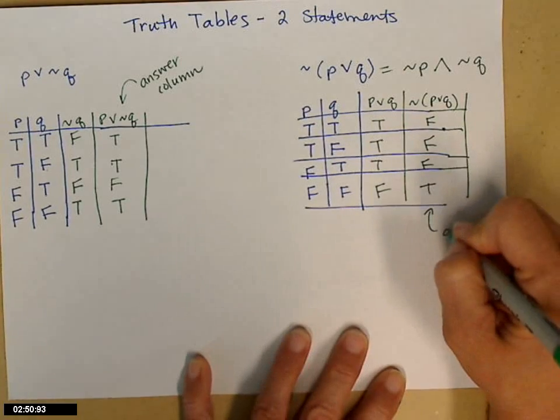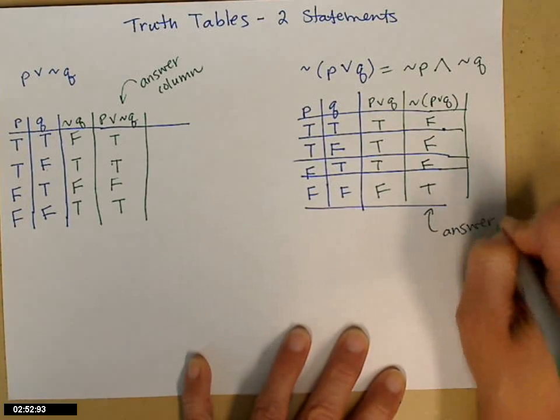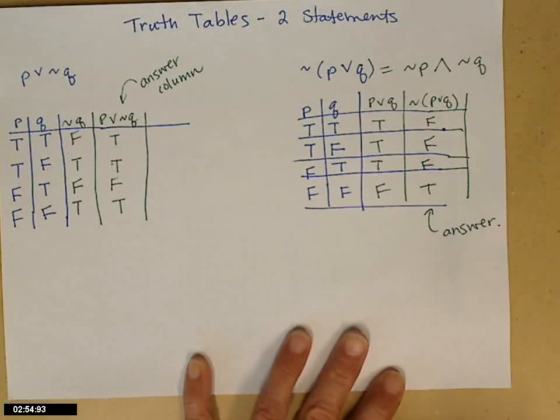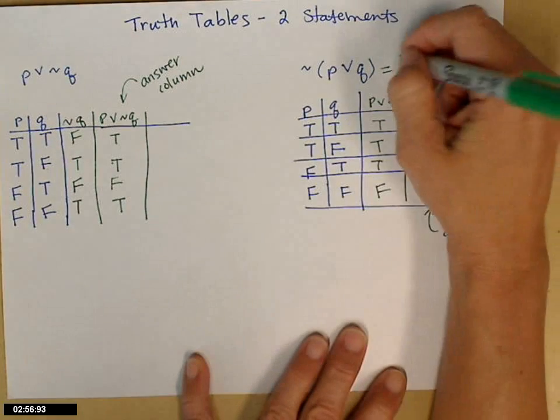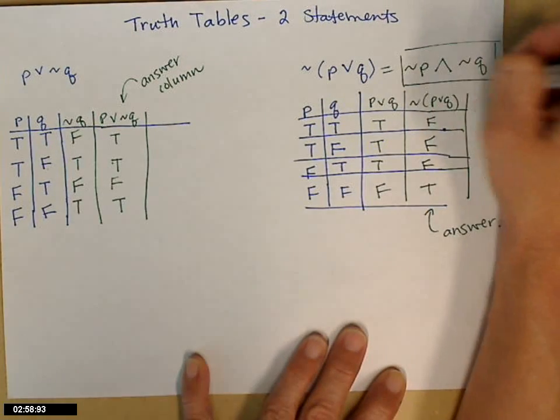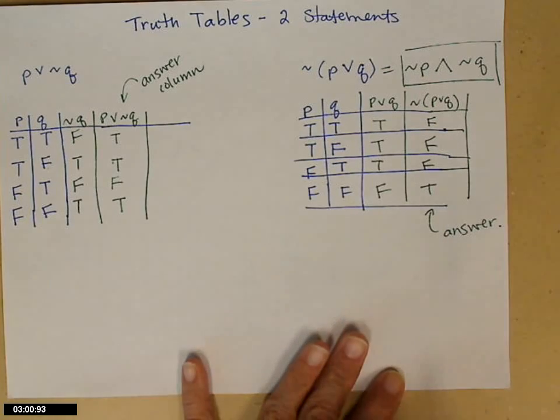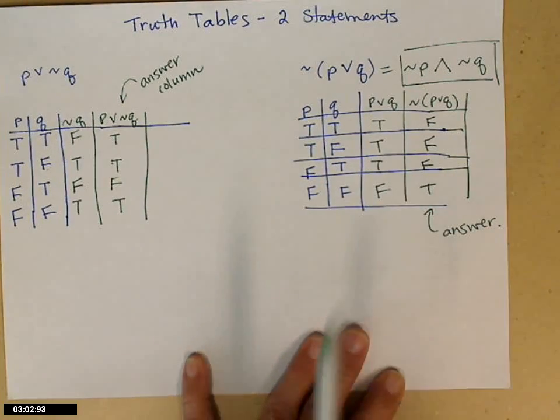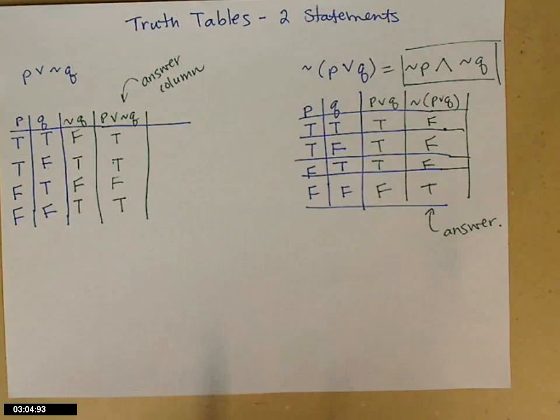And again, that last column is the answer. In case you're wondering, if you did a truth table using that not P and not Q, you have to get the exact same answer. Verify that for yourself though.